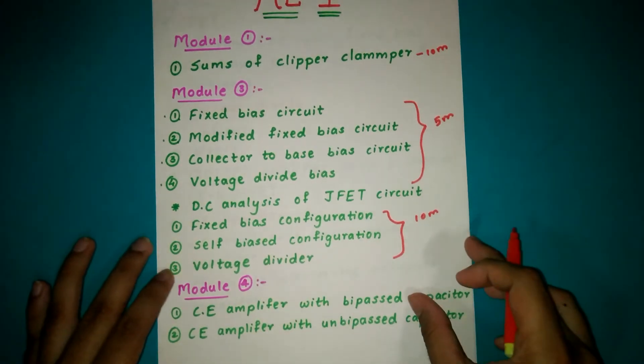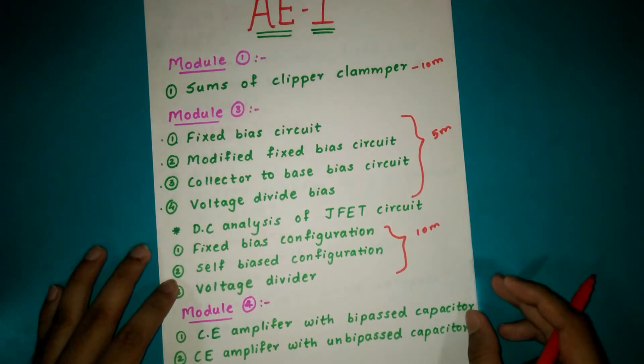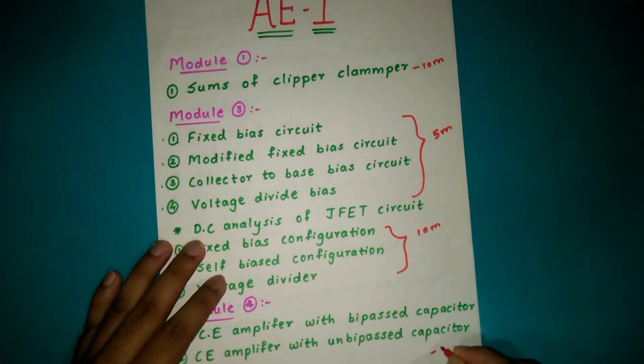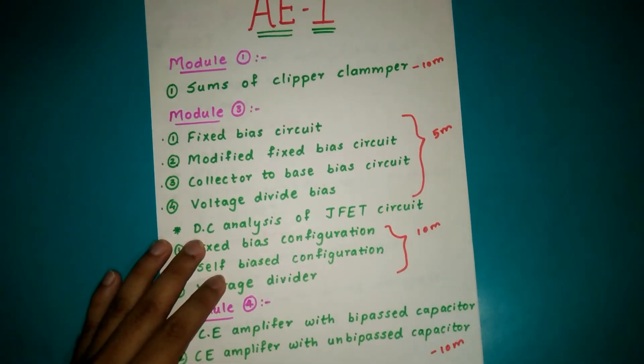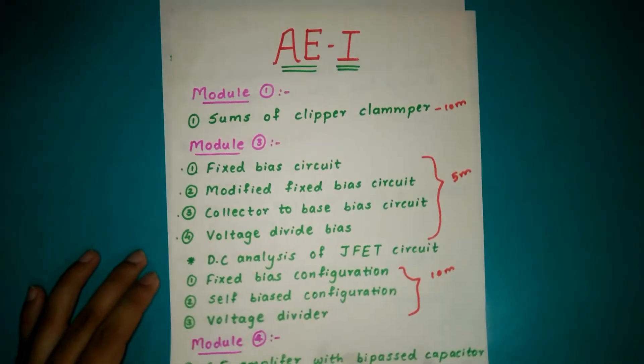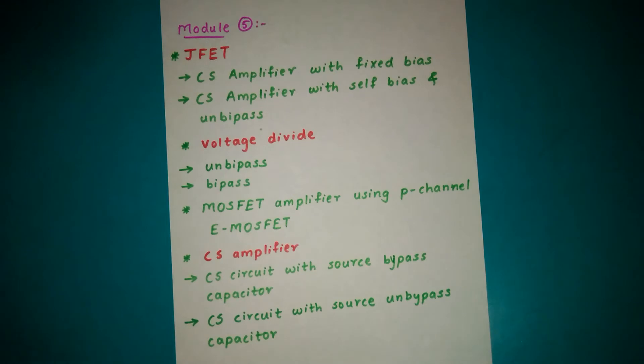Module 4: CE amplifier with bypass capacitor, CE amplifier with unbypassed capacitor. From this also you will get one question for 10 marks. This is including the options that I am saying, the weightage. Further proceeding, from Module 5, JFET circuit.